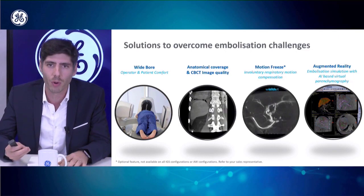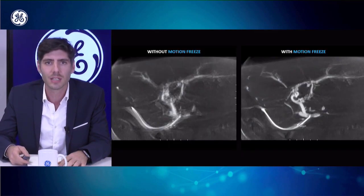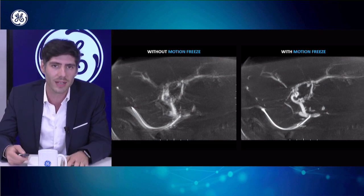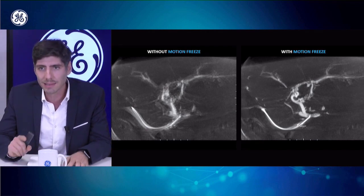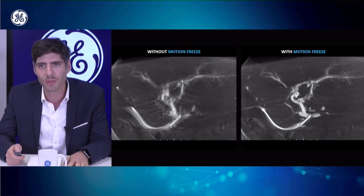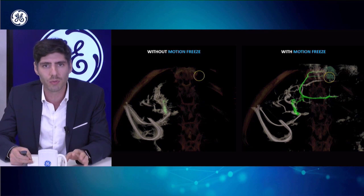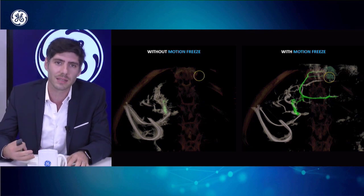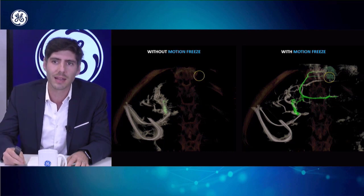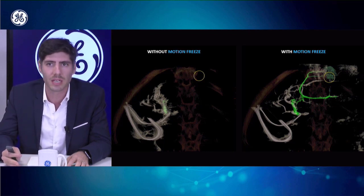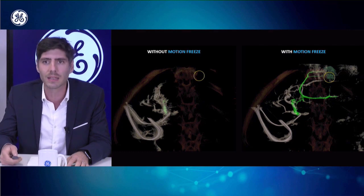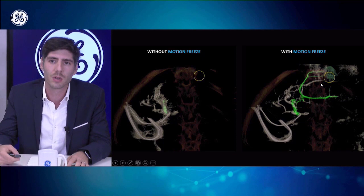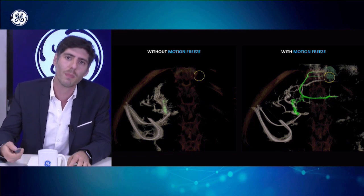Here is an example of a patient with respiratory artifacts. On the left without Motion Freeze and on the right with Motion Freeze — it's still not perfect but there is a real important difference. Without Motion Freeze you cannot use the most advanced software to see the pathway to the tumor and make your normalization. With Motion Freeze you can very clearly see depicted in green the trajectory to your tumor, helping you use available software and deliver better treatments.